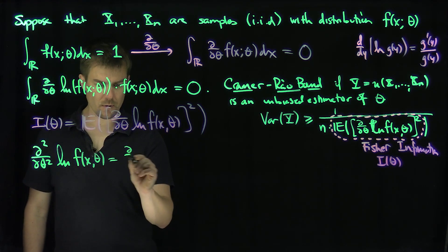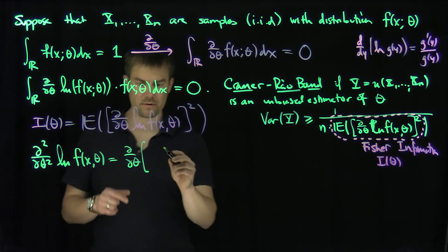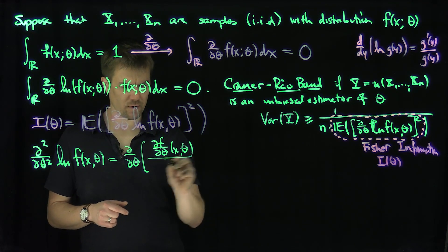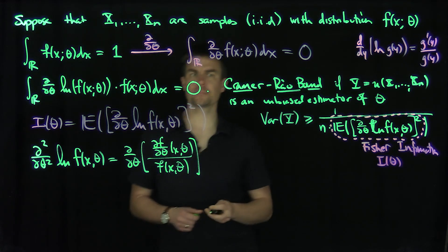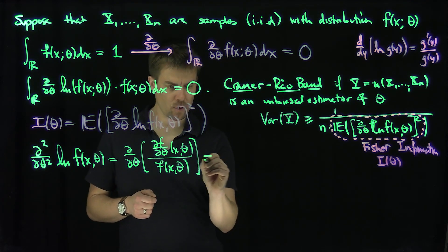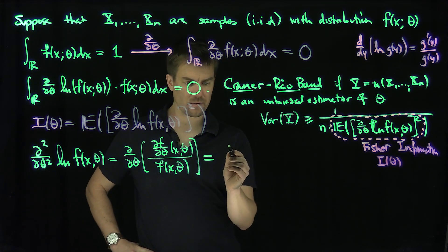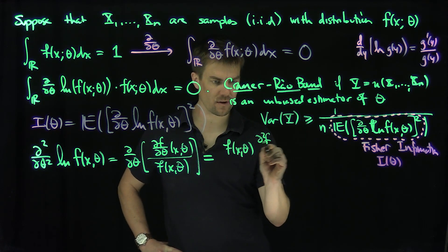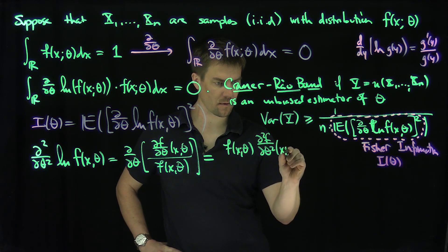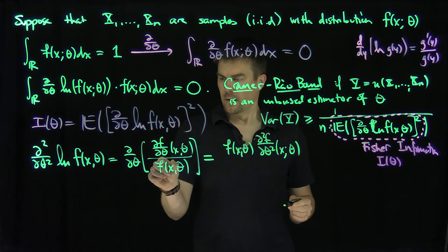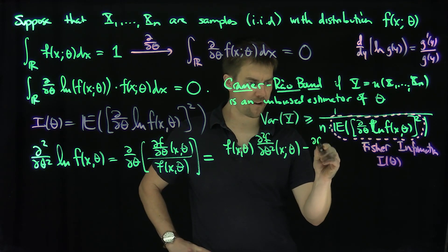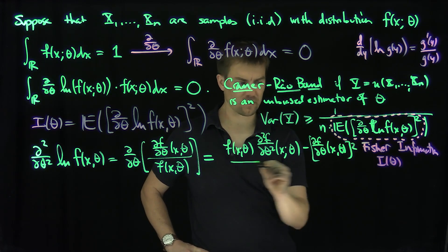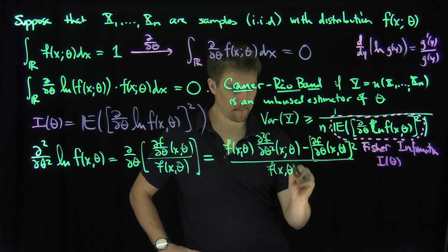The first theta derivative gives us partial f partial theta of x and theta over f of x and theta. Then applying the quotient rule for the second derivative: this is the bottom times the derivative of the top, which is f of x and theta times the second theta derivative of f, minus the top times the derivative of the bottom — that's minus partial f partial theta of x and theta, quantity squared — all divided by f of x and theta, quantity squared.